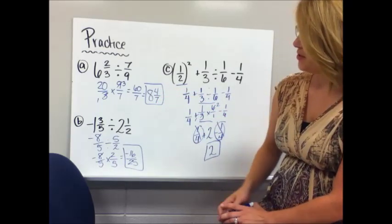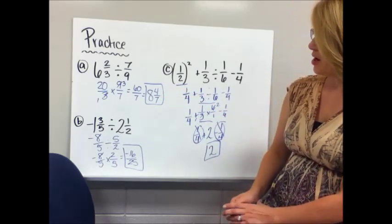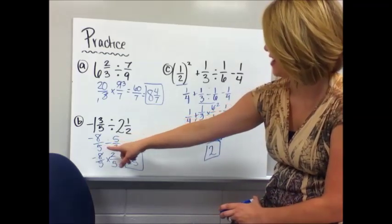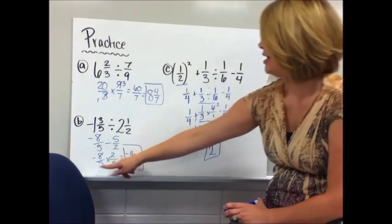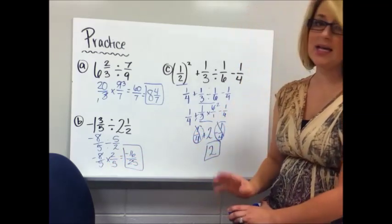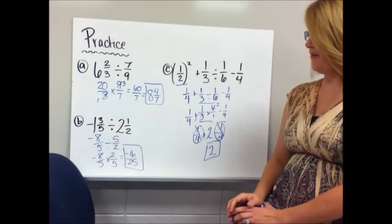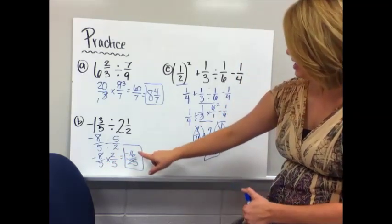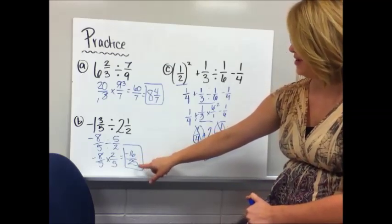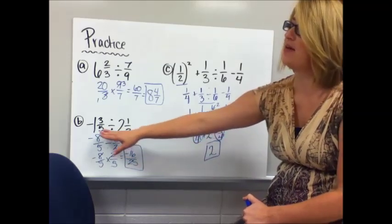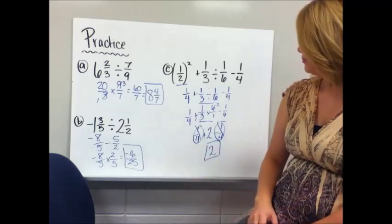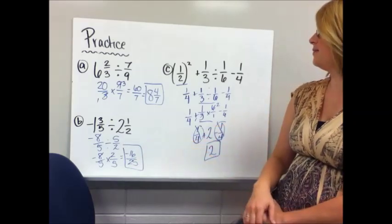For practice B: turn both into improper fractions, giving negative 8 over 5 divided by 5 over 2. Keep it, change it, flip it. Cross-simplification is not possible here, so multiply across to get negative 16 over 25. It's negative because two numbers with different signs are being multiplied, and that fraction cannot be simplified further.